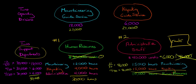Now all of the administrative staff costs have been allocated — it's at zero. In total, the mountaineering guide service received $41,000 in allocated costs, and the kayaking service received $29,000. The $6,000 that was allocated to administrative staff from HR was ultimately passed through, and nothing was allocated back to the HR department.